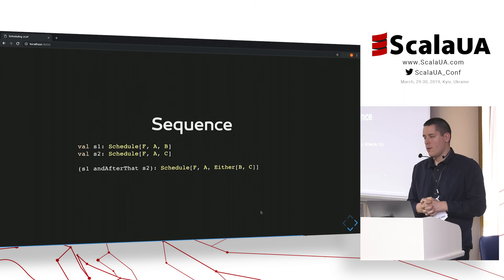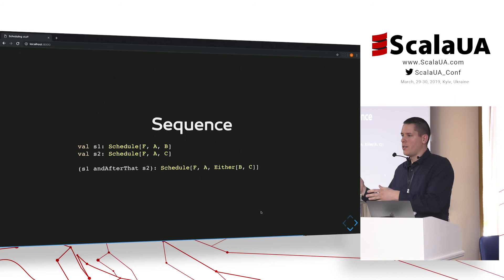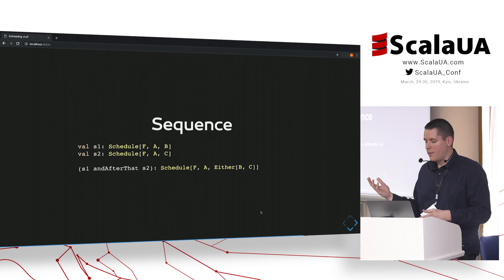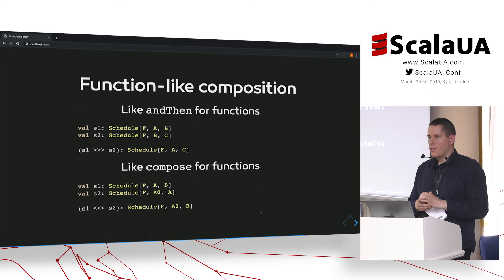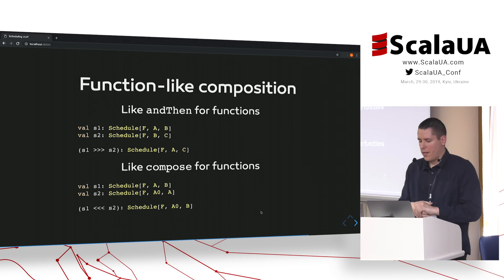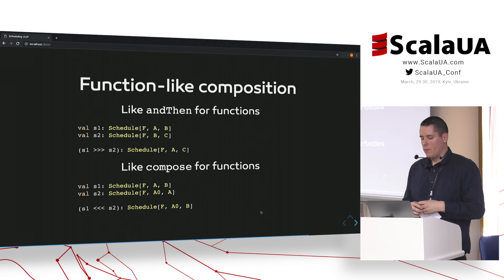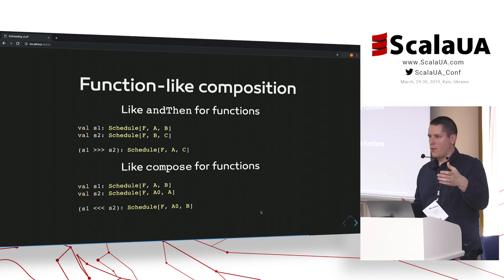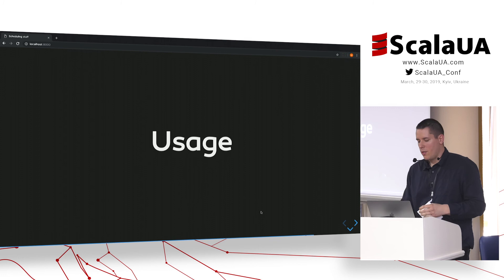We have the means of sequencing two schedules — this will run through the first one, and when it says stop, the next one kicks in. The return type is an `Either` of `B` or `C`, the left-hand or right-hand side. There is also function-like composition, which is similar to function composition — we compose schedules so it doesn't run through the first one then the second, but rather computes the result of the first one and feeds it to the second one to make its decision.